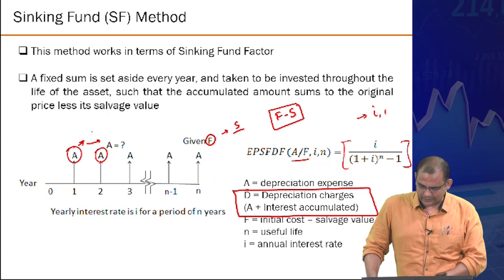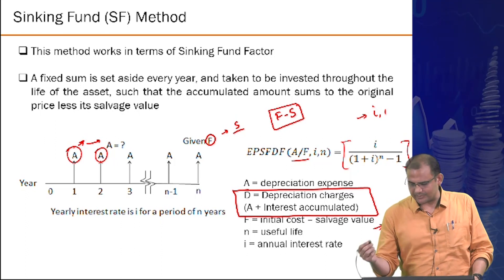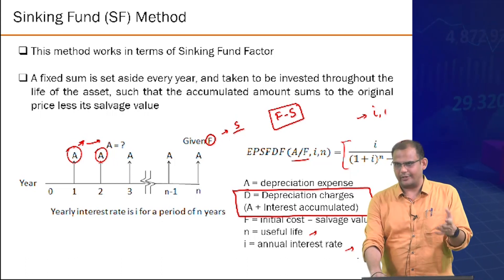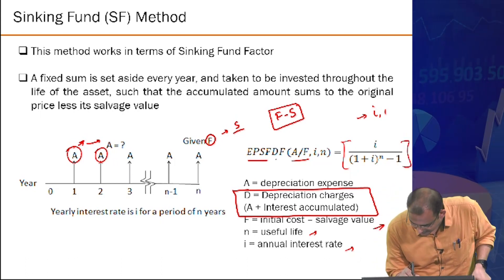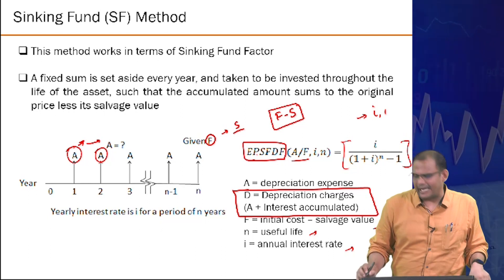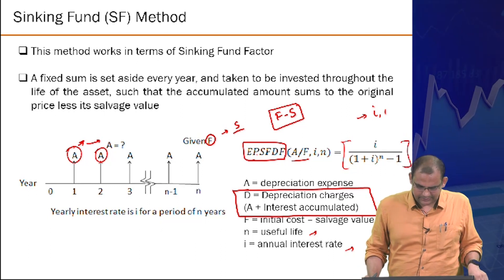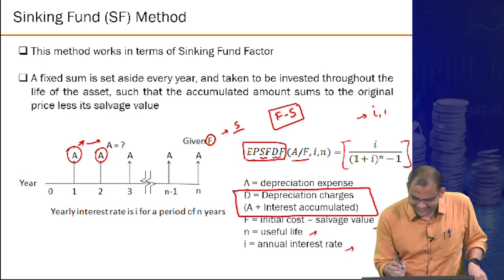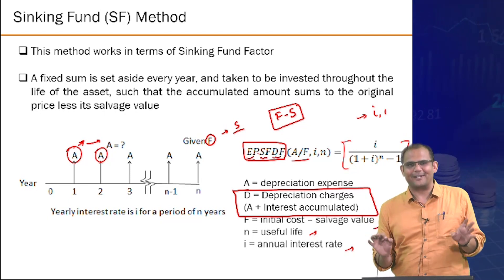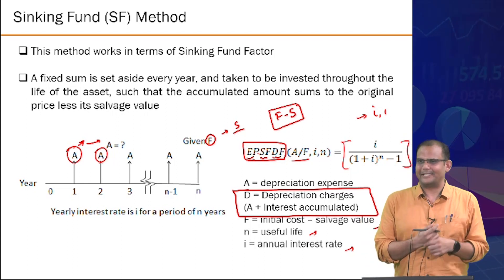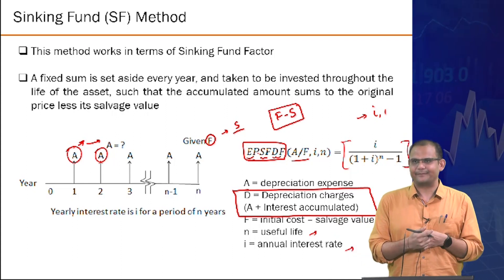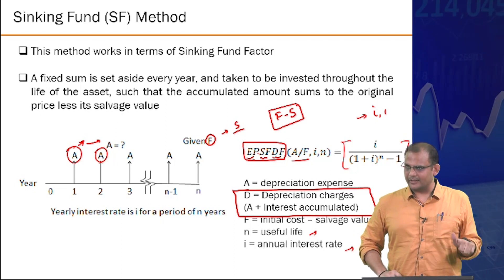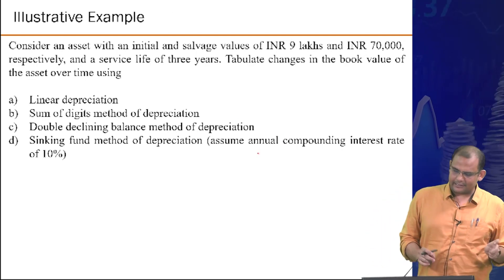Summary of sinking fund variables: F is initial cost minus salvage value, N is useful life, i is annual interest rate. The actual depreciation in any year is the uniform annual deposit A plus the accumulated interest from the A series up to that point.